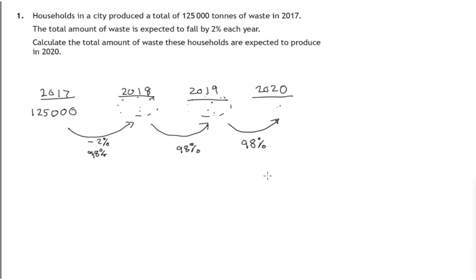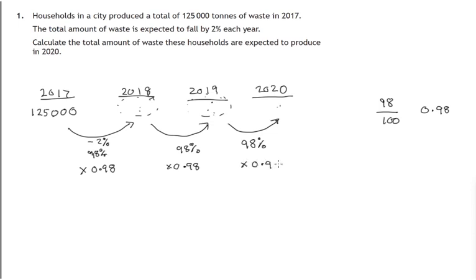Now how do we work out 98 percent of something? Well, 98 percent is 98 out of a hundred — that's 0.98. So we're multiplying by 0.98 each time we try to find 98 percent. We're multiplying by 0.98, and that gives us an indication of how to find the estimate of the amount of rubbish produced by 2020.